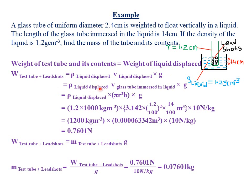The upthrust equals ρ × πr²h × g. The density is 1.2 g/cm³, converted to SI units: 1.2 × 1000 = 1200 kg/m³. The diameter is 2.4 cm, so radius = 1.2 cm = 1.2/100 m. Height immersed = 14 cm = 14/100 m. So the volume = π × (1.2/100)² × (14/100) = 0.000063342 m³ (to five significant figures).